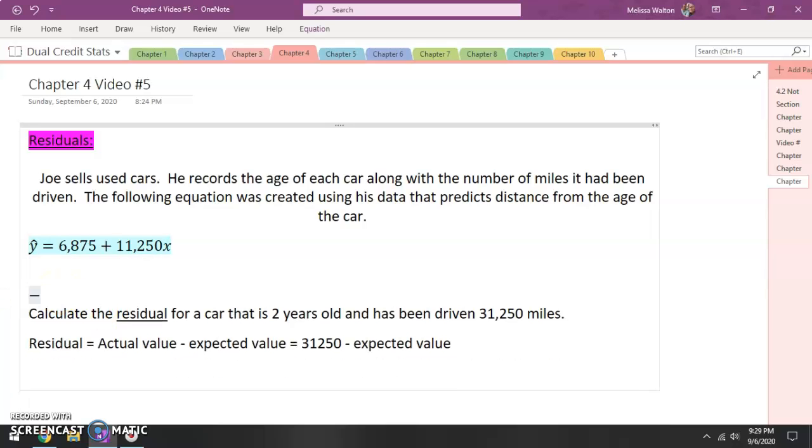All right, so if I were to type in, or if I were to substitute in two, predicted of two, 6,875 plus 11,250 times two. And if I were to multiply that all together, times two plus 6,875, this car is expected to have 29,375 miles.